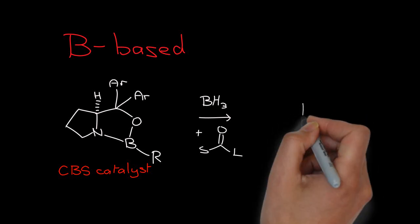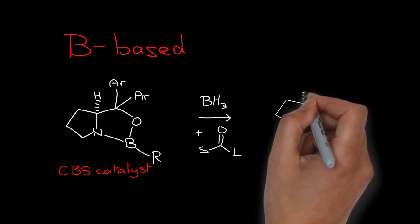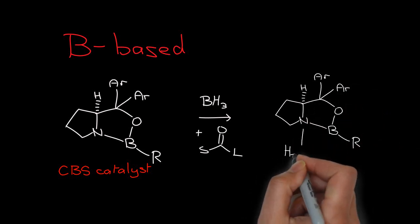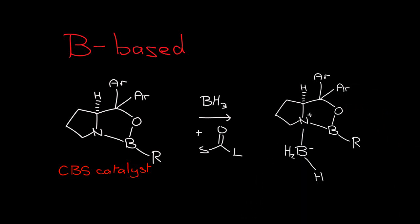Coordination of the endocyclic nitrogen with the borane increases the Lewis acidity of the endocyclic boron and provides a nucleophilic hydride. The carbonyl compound can sit between these two, with the smallest group occupying the smallest space.